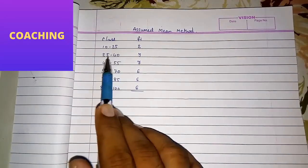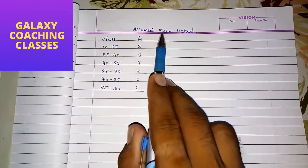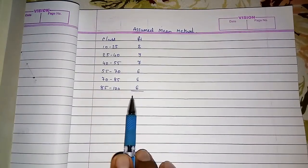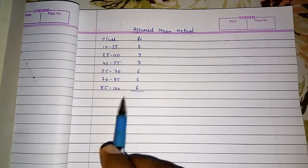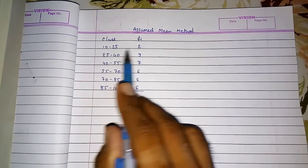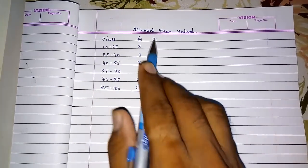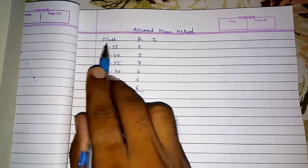Hello friends, today we are going to find out the mean by assumed mean method. Look here, the class is given to us and frequency is given to us. So first of all, we are having class, so we cannot do anything. First we have to find out the class mark, that is xi.